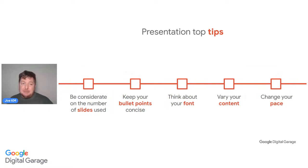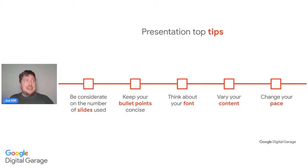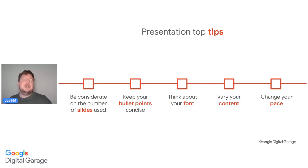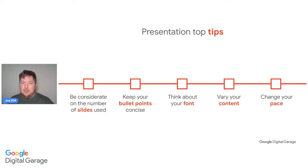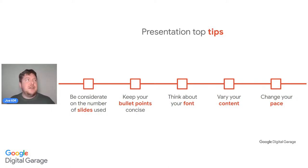Presentation tips: be considerate of the number of slides used — 60 minutes, 60 slides, chop it down. Keep your bullet points concise so you have minimal bullet points and can maximally deliver. Think about your font — if it's a struggle to read, is it needed? Comic Sans looks ridiculous. If someone has to squint to figure out what it says, rethink it. Use a simple font or your branded font for titles, and something like Arial or Times New Roman for body text.